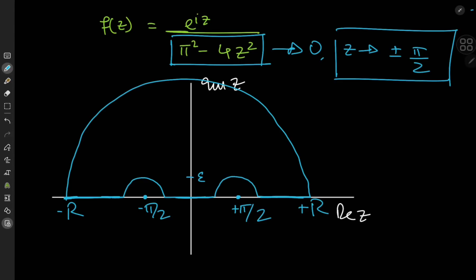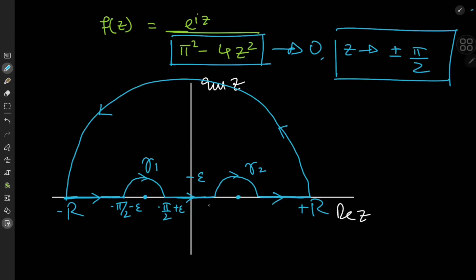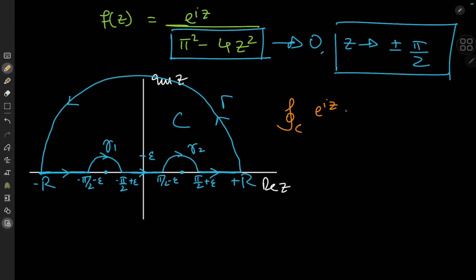The radii of the smaller semicircles are ε. We traverse the contour in the counterclockwise sense. For additional labeling: the diameter endpoints of the small arc around −π/2 are at −π/2 − ε and −π/2 + ε (this arc is γ₁). Similarly, γ₂ surrounds π/2, with endpoints π/2 − ε and π/2 + ε. The big semicircle is Γ, and the whole contour is C. The contour integral of e^(iz) / (π² − 4z²) dz over C equals 0.